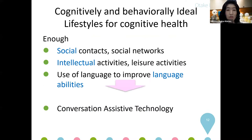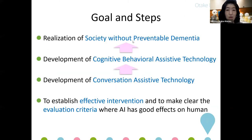What are the cognitively and behaviorally ideal lifestyles for cognitive health? These include enough social contacts and social networks, enough intellectual activities and leisure activities, and use of language to improve language abilities. We therefore decided to develop conversation assistive technology to support such social and cognitive lifestyles. The goal is the realization of a social society without preventable dementia, and towards this goal we develop Cognitive Behavioral Assistive Technology.